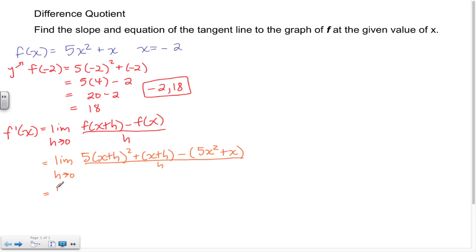Let's rewrite to be proper: the limit as h approaches 0. 5 now I need to foil this x plus h. Well x times x gives me x squared, x times h gives me xh, but I want to have two of them so that's 2xh, and then h times h gives me h squared. And then I can just rewrite the positive x, the positive h.